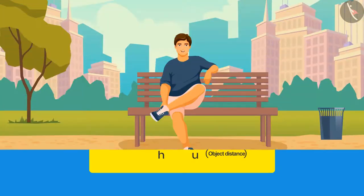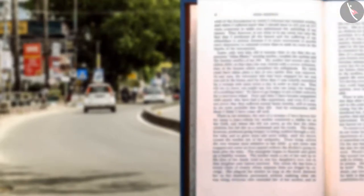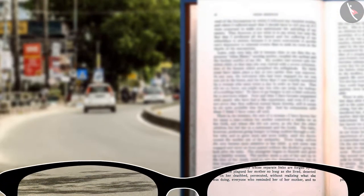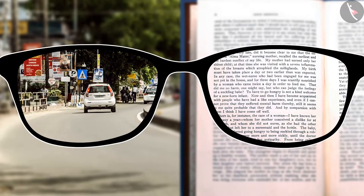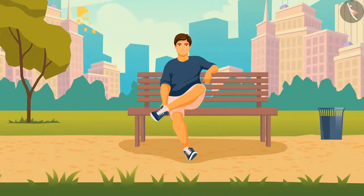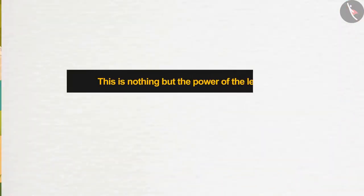Now let's move to the next part of the video. You must have noticed that some people find it difficult to see distant or nearby objects clearly. Doctors suggest these people wear eyeglasses. We often hear from friends who wear eyeglasses that the power of their lenses is plus 2 or minus 1.5. What does this power mean, and how are these eyeglasses made? We will find the answers in this part of the video.